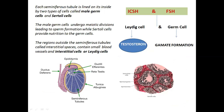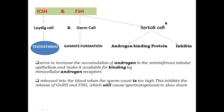Recalling from the previous class: in the seminiferous tubule, there is a male germ cell and a Sertoli cell. The germ cells are involved in male gamete formation. In the interstitial space of the seminiferous tubule, small blood vessels and interstitial cells are found.